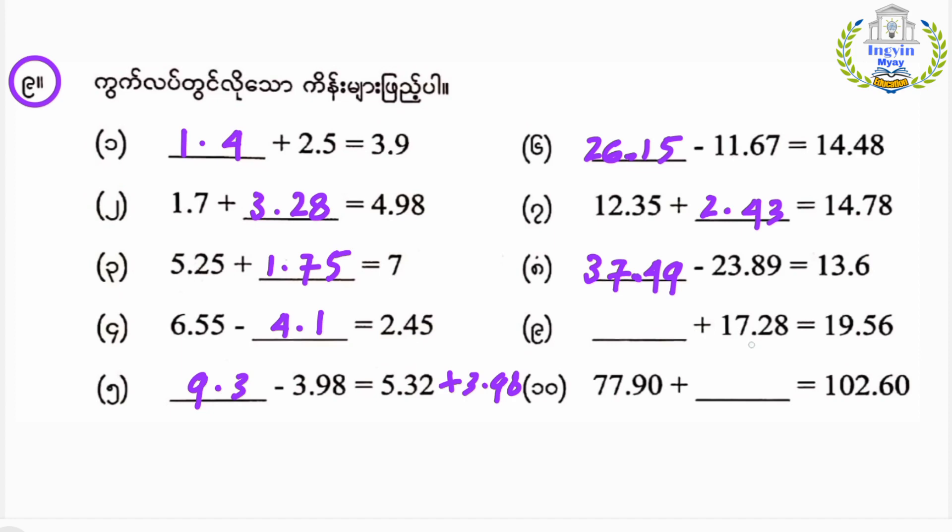Number eight: plus seventeen point two eight equals nineteen point five six. Nineteen point five six minus seventeen point two eight equals two point two eight.